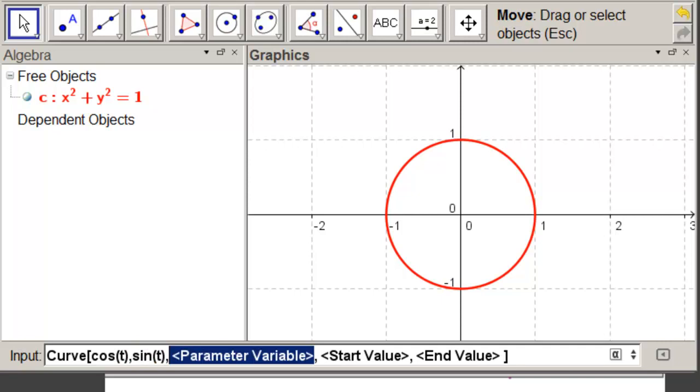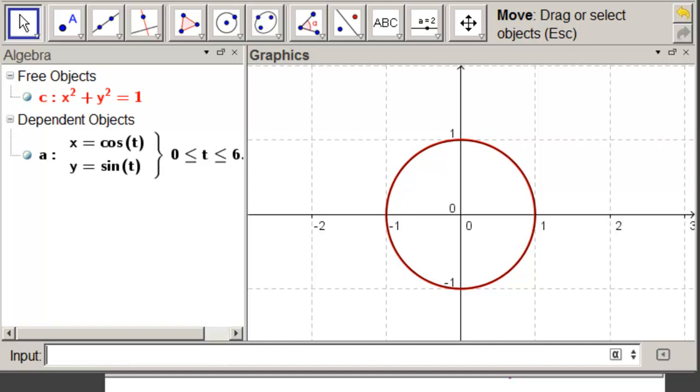Our parameter is t. Our start value is 0. And our end value is 2 times pi. When we hit enter, our red circle should turn black. It does. So we're good.